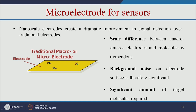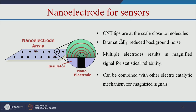Compared to microelectrodes, nanoelectrodes based on CNT tips significantly reduce background noise in sensor applications, because the molecule and electrode are both at the nanoscale. Using CNT tips for nanoelectrodes means the sensor can match exactly with the target molecule at nano scale, giving high sensitivity.